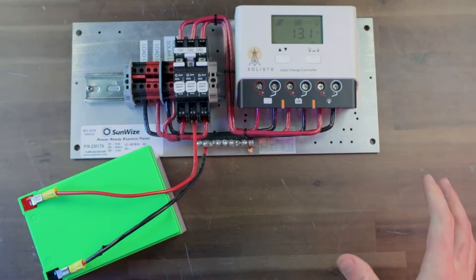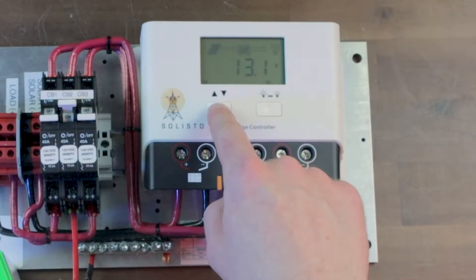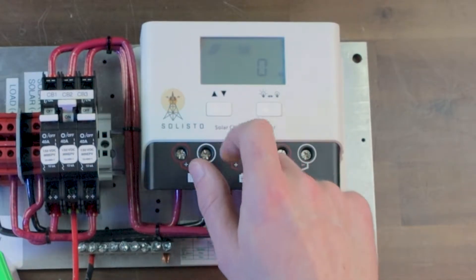The next thing you need to do is use the arrow key to scroll through the main menus until you get to the load setting display. You will know that it is the load setting display because you will have a number here and a light bulb icon here.